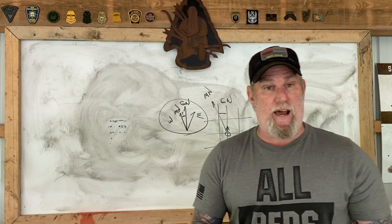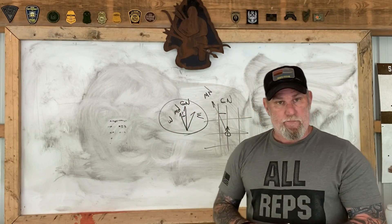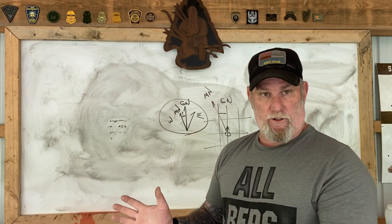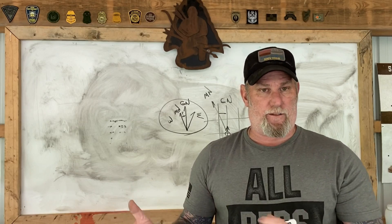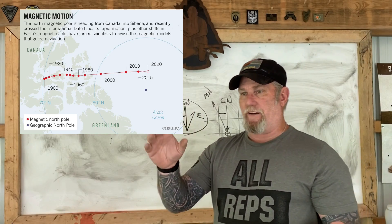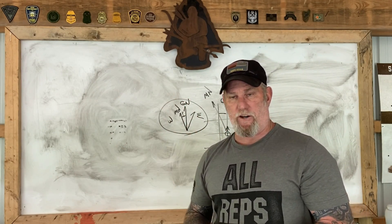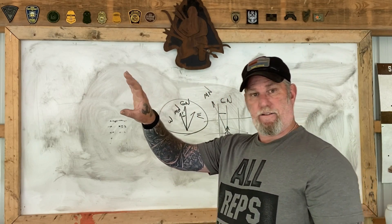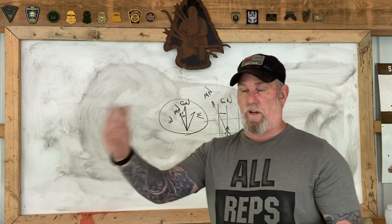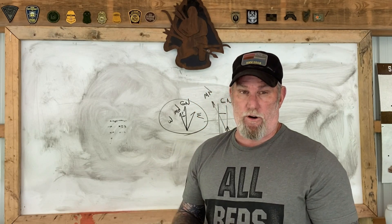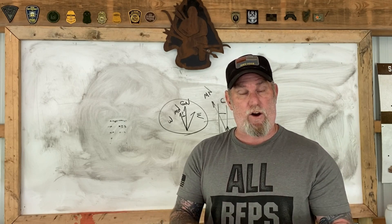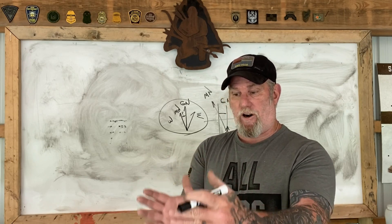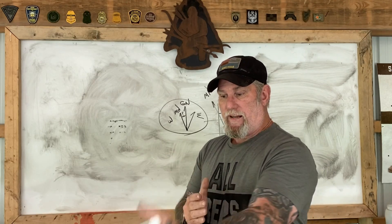Every good topo map is going to have a declination diagram on it that will tell you what the degrees of differential is, easterly or westerly. The problem is that we now know the magnetic pole has been shifting. I'll put a picture in this video from a website that talks about how far it's shifted, but it's moving from over Canada toward Siberia. Maps printed 25 years ago could be completely wrong, and even something printed 10 years ago could be off by several degrees. So if we can figure out the magnetic differential ourselves on the ground, we can match it better to the map so our compass and map match, and we can navigate accurately.